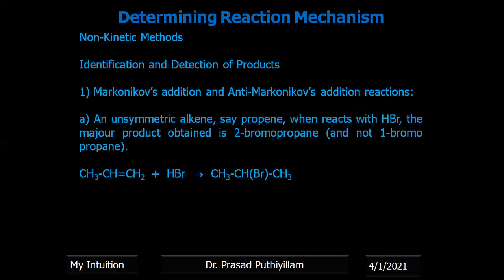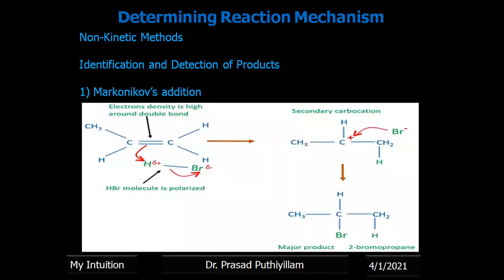Some examples: first, Markovnikov addition and anti-Markovnikov addition reactions. When an unsymmetric alkene, say propene, reacts with HBr, the major product obtained is 2-bromopropane and not 1-bromopropane. This is an example of Markovnikov addition, and its mechanism can be explained with the formation of a carbocation as intermediate.